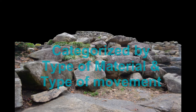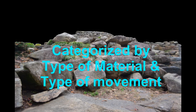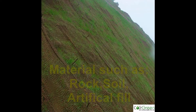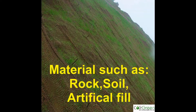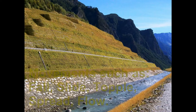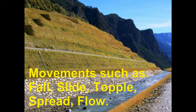Landslides can be categorized on the basis of the type of material and type of movement of materials. The type of material can be rock, soil, or artificial matter, and the type of movements can be fall, slide, topple, etc.